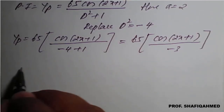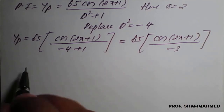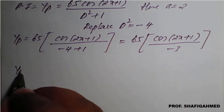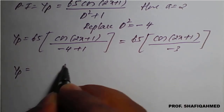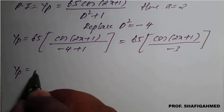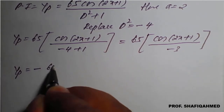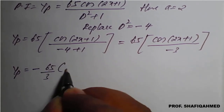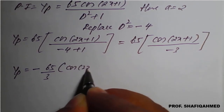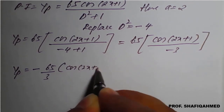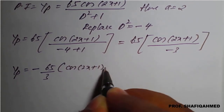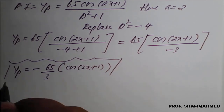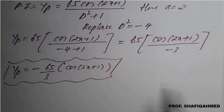Therefore, on simplification, yp = -65/3 · cos(2x + 1). This is the yp value.